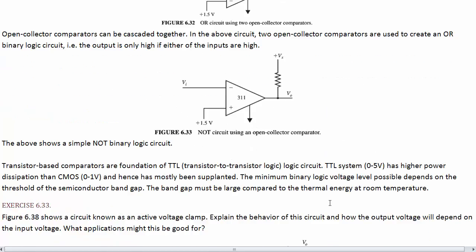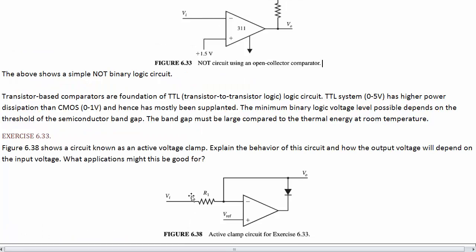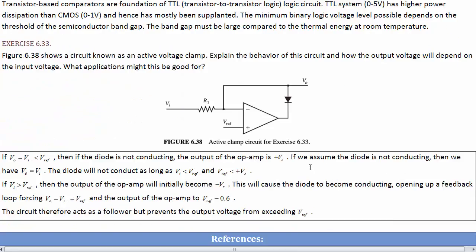Now, an example. Here is an active voltage clamp. Explain the behavior of the circuit and how the output voltage depends on the input. And what applications might this have. So, note that this is not actually a 311. This is just a regular op amp question.